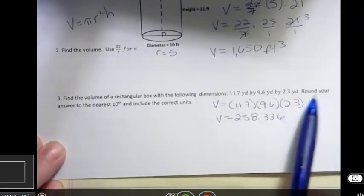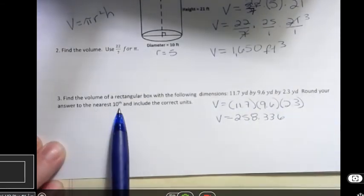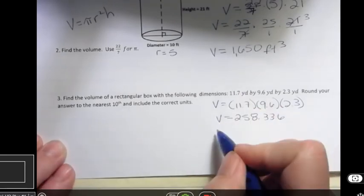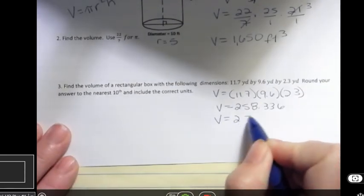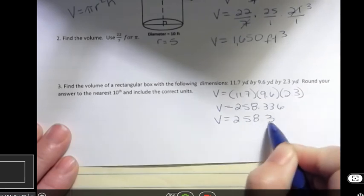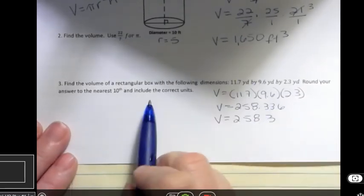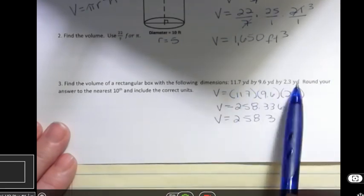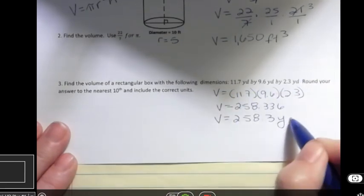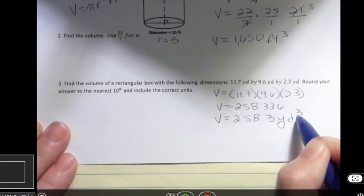And what I get is 258.336, but in this problem I was asked to round to the nearest tenth. You need to look and see whatever you're asked to round to, but 258.3. And then of course I want to include the correct units. And since I'm talking about something that's three-dimensional, it's going to be my original units to the third power.